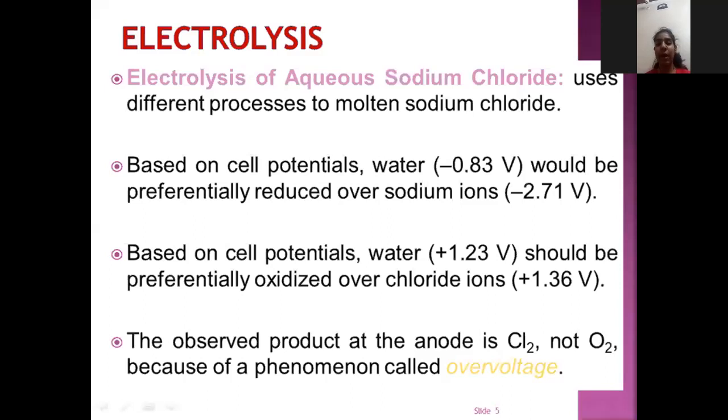Electrolysis of sodium chloride uses different processes to molten sodium chloride. Based on cell potential, water minus 0.83 volt would be preferentially reduced over sodium ions minus 2.71 volt. Based on cell potentials, water 1.23 volt should be potentially oxidized over chloride ions plus 1.36 volt. The observed product at the anode is Cl2, not O2 because of a phenomenon called overvoltage.